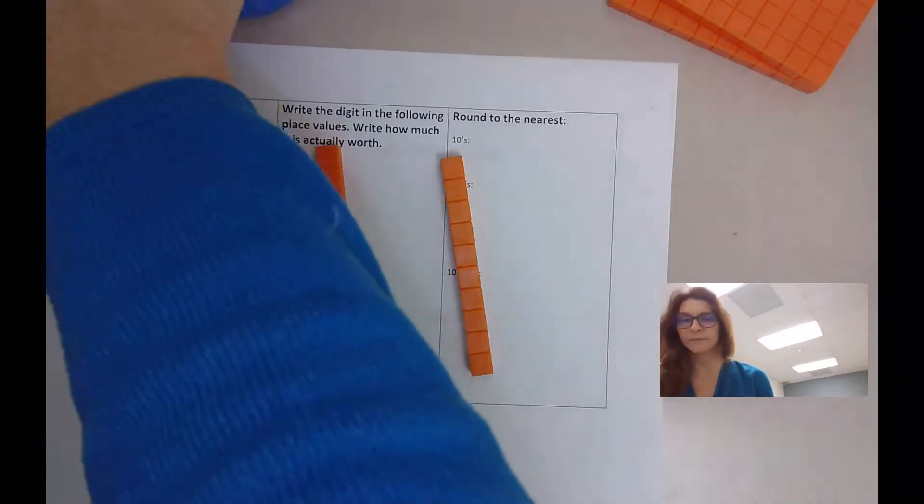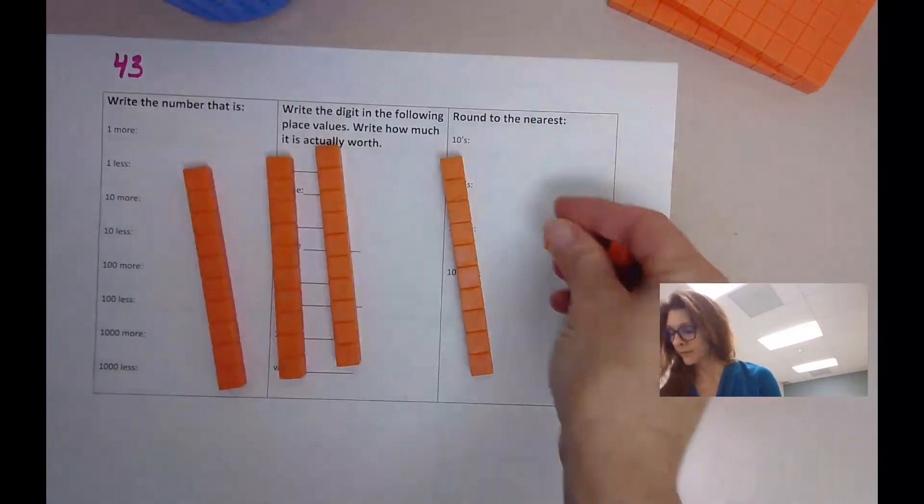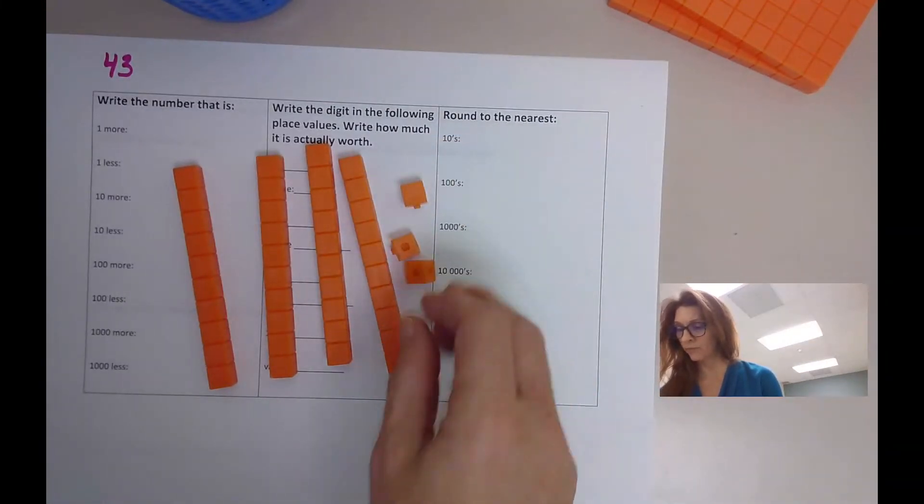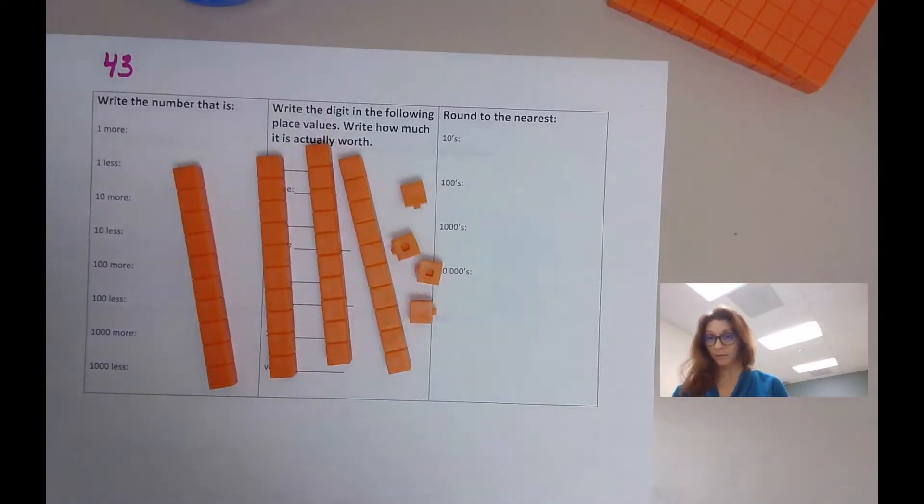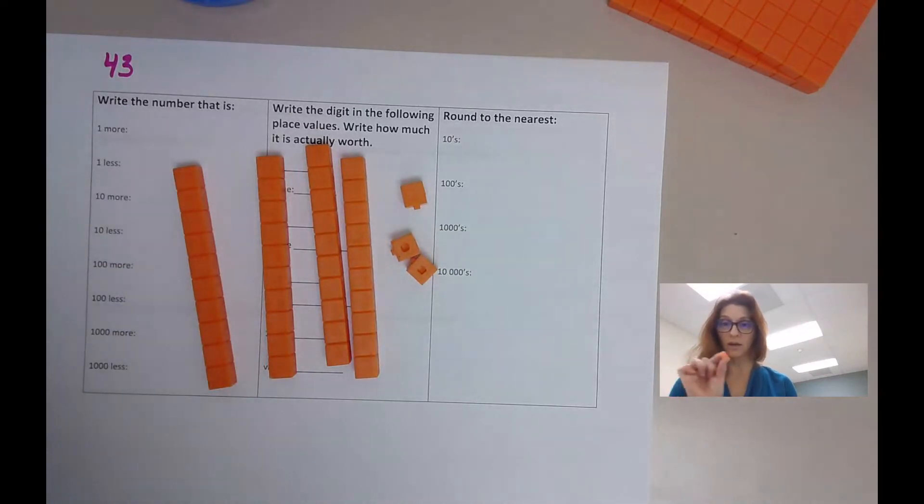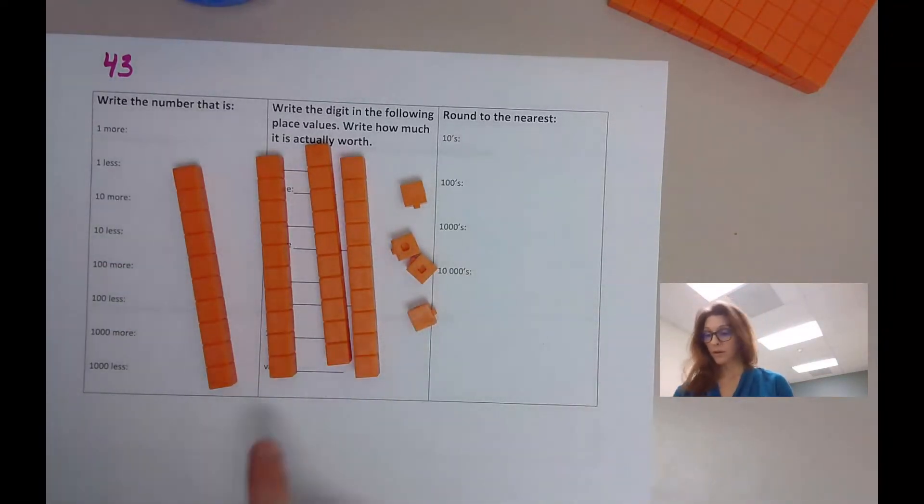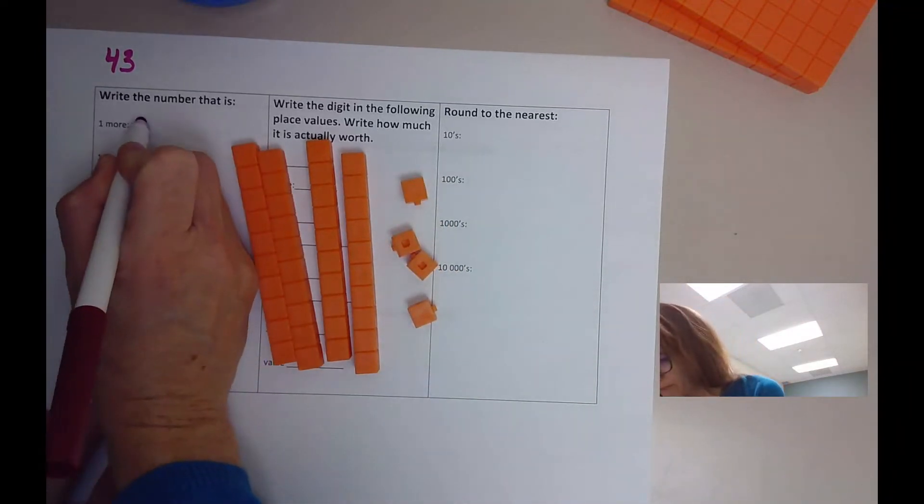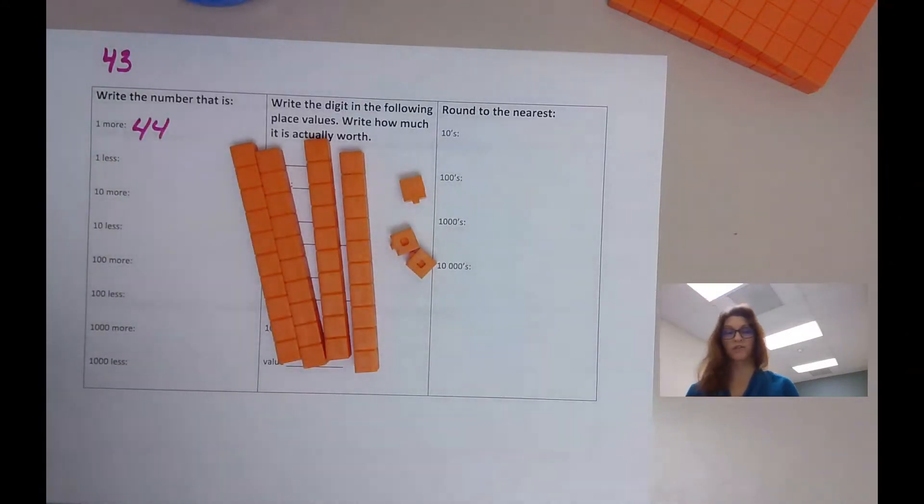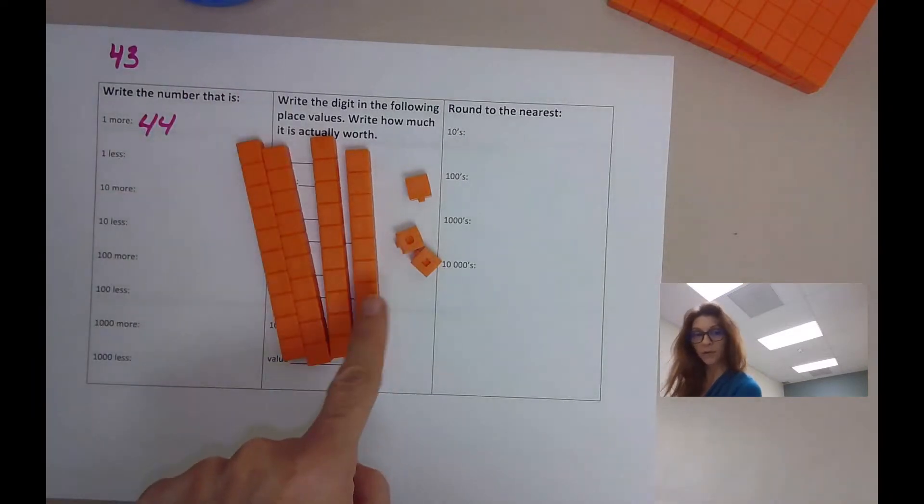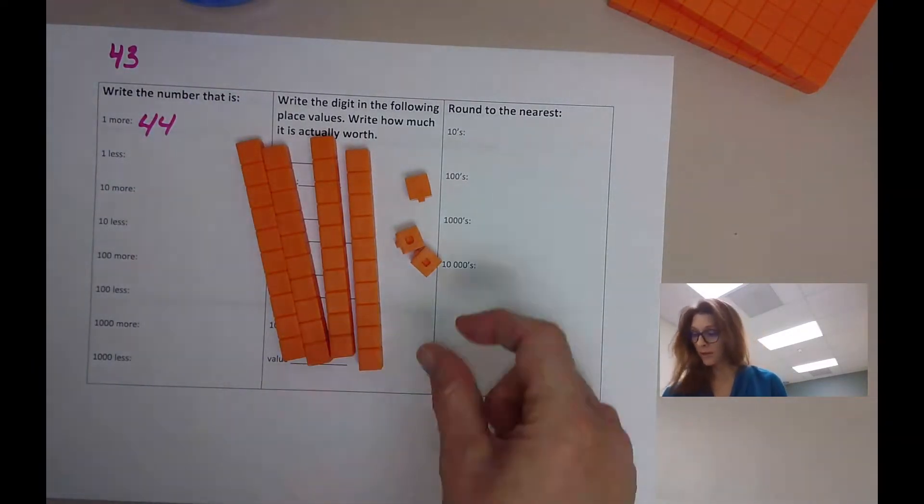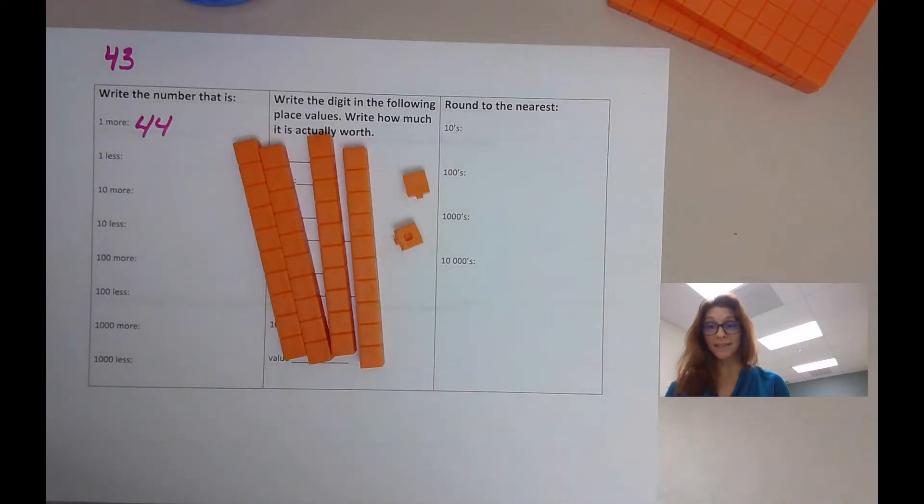This first column says write the number that is one more. So you have 43. 10, 20, 30, 40, 41, 42, 43. What is one more than 43? If I add one more, 40, 1, 2, 3, 4, that's 44. Go back to your original number. What is one less? Well I had 43 here with my model. Take one away, one less, that's 42.